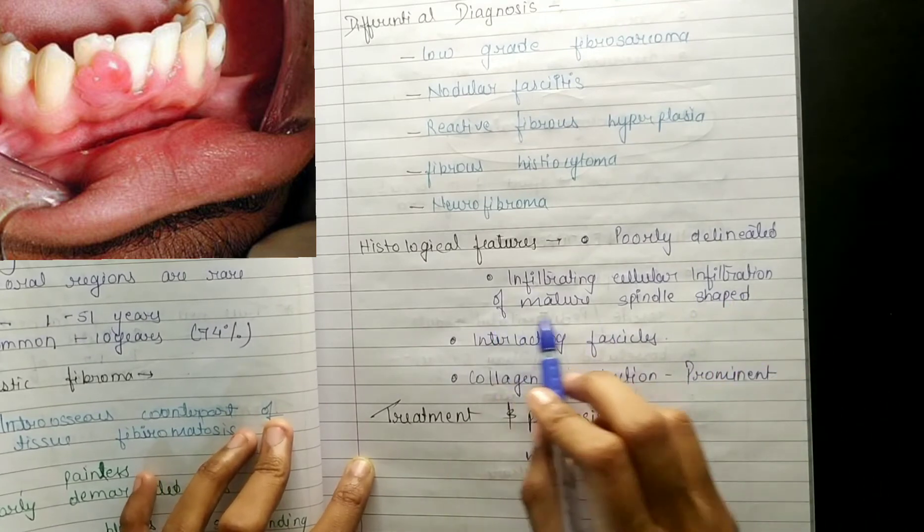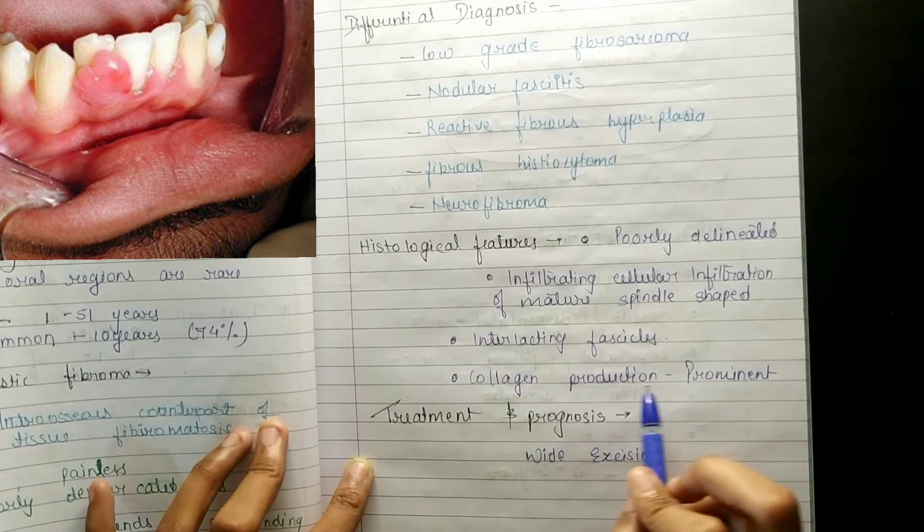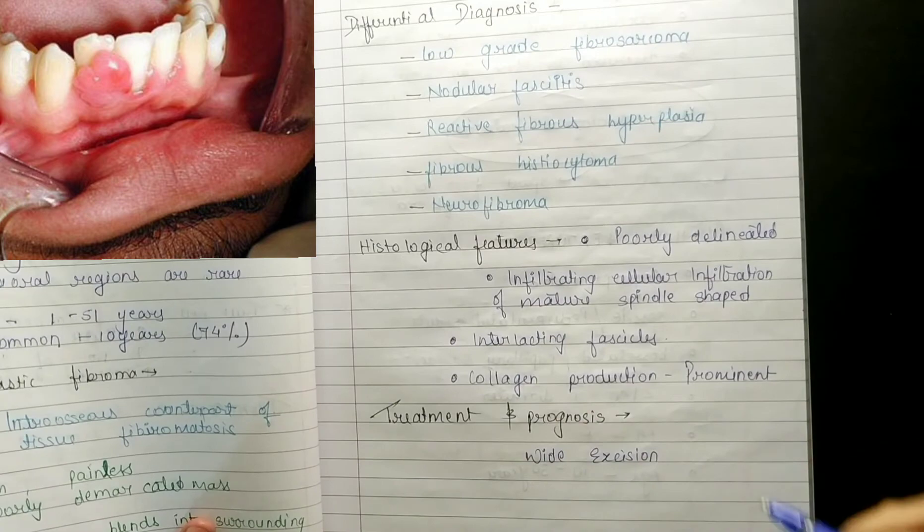Fibromatosis shows mature spindle shaped interlacing fascicles, collagen production which is prominent. Treatment is wide excision. So this is all about fibromatosis.